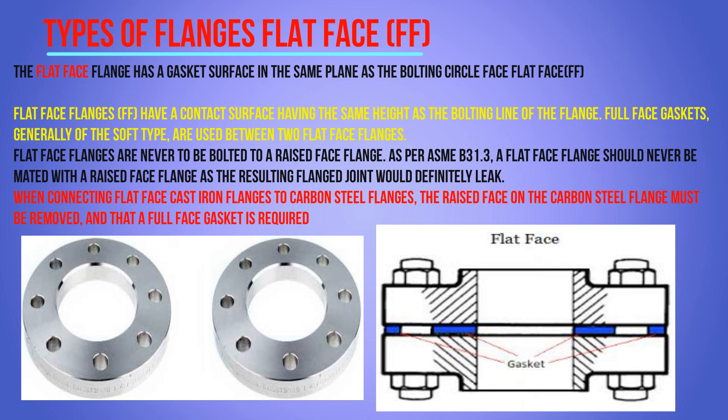Flat face flanges are never to be bolted to a raised face flange as per ASME B31.3, as the resulting flange joint would definitely leak. When connecting a flat face flange with a raised face flange, the raised face must be removed and then joined with a flat face gasket. When connecting flat face cast iron flanges to carbon steel flanges, the raised face on the carbon steel flange must be removed and a full face gasket used.